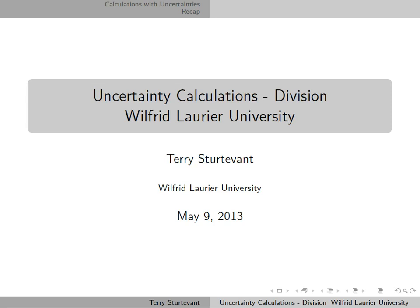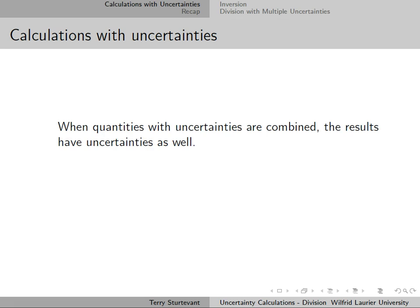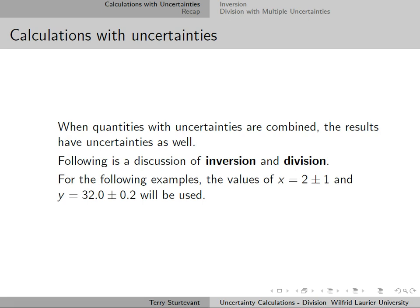This document is about calculations with uncertainties, and this one is about division. When quantities with uncertainties are combined, the results also have uncertainties, and so this discussion will be about inversion and division. For the examples here, the values x = 2 ± 1 and y = 32 ± 0.2 will be used.